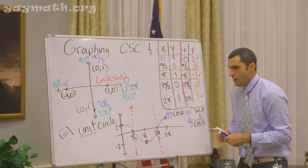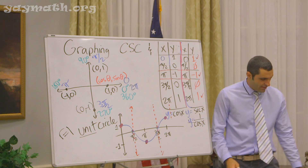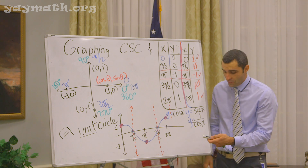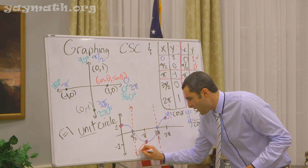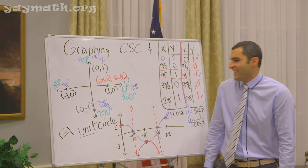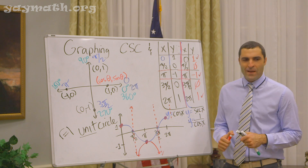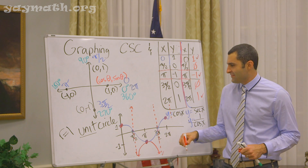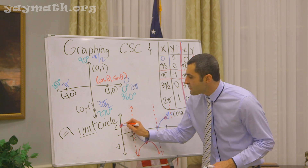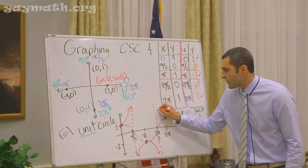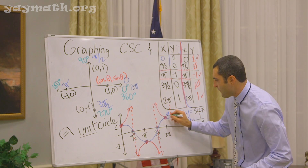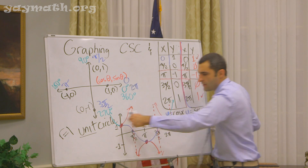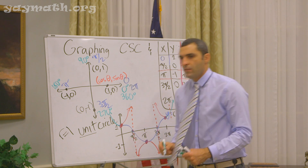If you recall the rules of asymptotes — flirt but don't touch. That's the romantic rule. You'll notice here it's like half of it. But the full graph continues on infinitely — it's going to be a high one, a low one, high one, low one, over and over.